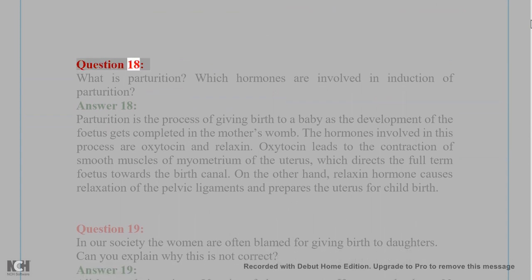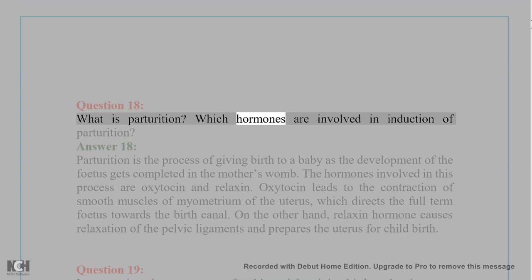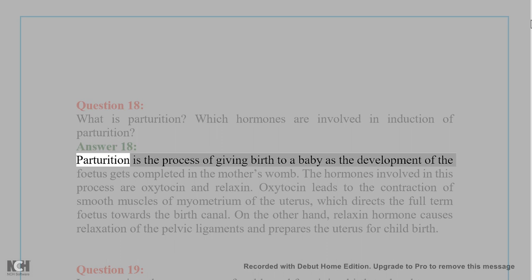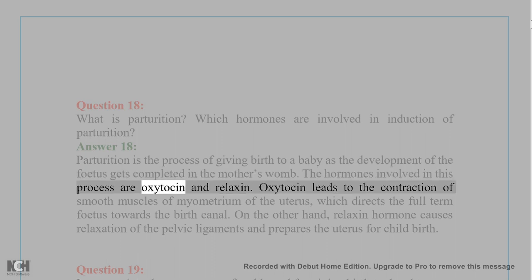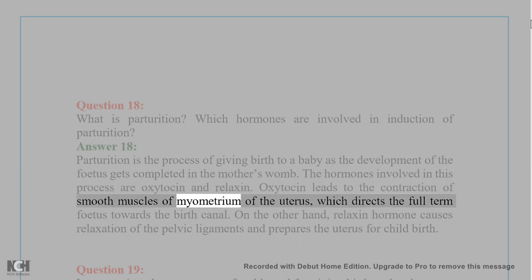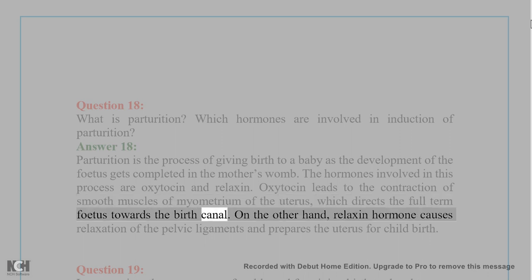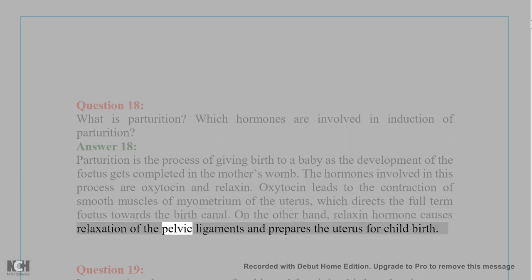Question 18: What is parturition? Which hormones are involved in the induction of parturition? Answer 18: Parturition is the process of giving birth to a baby as the development of the foetus gets completed in the mother's womb. The hormones involved are oxytocin and relaxin. Oxytocin leads to the contraction of smooth muscles of the myometrium of the uterus, directing the full-term foetus towards the birth canal. Relaxin hormone causes relaxation of the pelvic ligaments and prepares the uterus for childbirth.